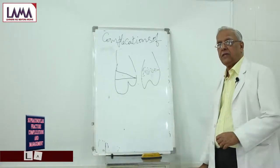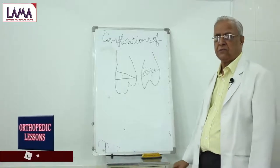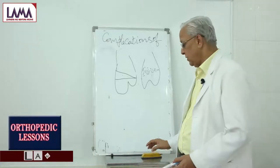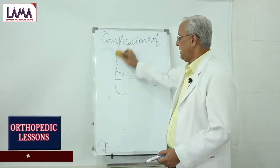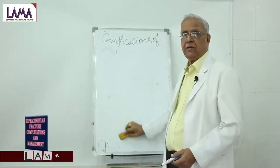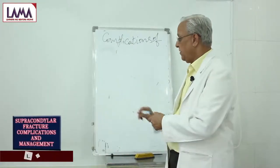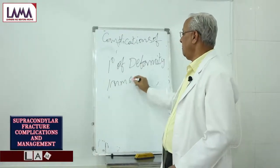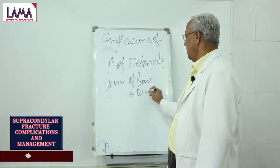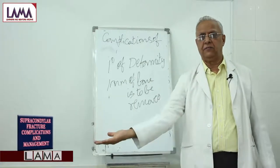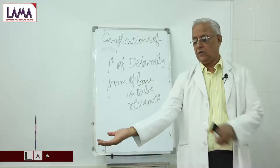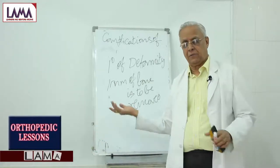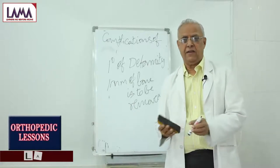How much bone is to be removed is the next question. As a kind of yardstick: for every 1 degree of deformity, 1 millimeter of bone is to be removed. So if there is about 15 degrees of excess deformity, you have to do a 15-millimeter bone removal and bring it into position. This is the approximate guideline.